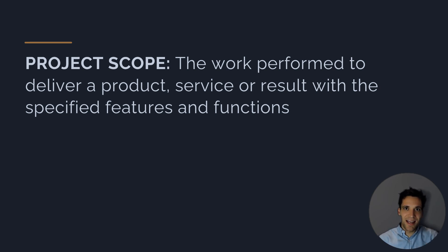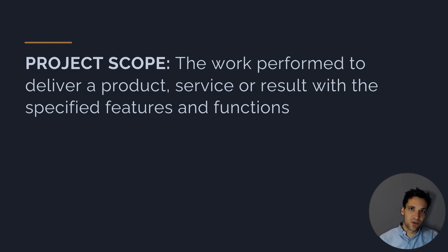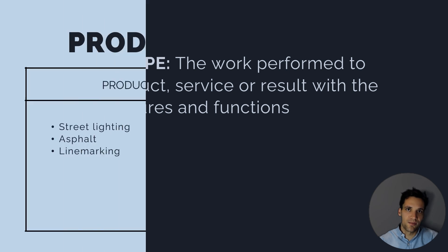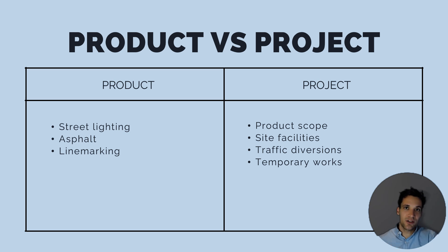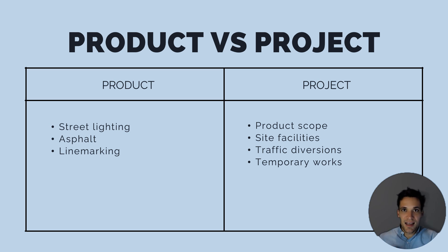Project scope is all the work we need to do to complete the project — it obviously includes building the finished product, delivering the bridge with the lighting and the lanes, but it also includes other works. For example, we might have to set up temporary site facilities or relocate services — work that doesn't necessarily form part of the finished product but is included in our project scope. So product scope would be the street lighting, the asphalting, the line marking, while project scope includes all of that plus temporary works, site facilities, and organizing a security guard — tasks that don't form part of the finished product but are in scope.